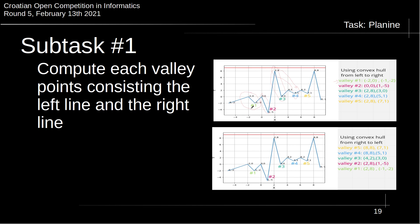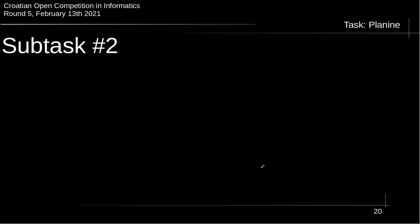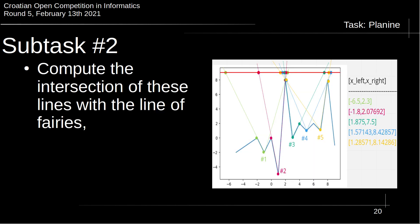These two points will form the left line. To compute the intersection between this line and the line of ferries, we then go from right to left to compute the right two points of the valley.